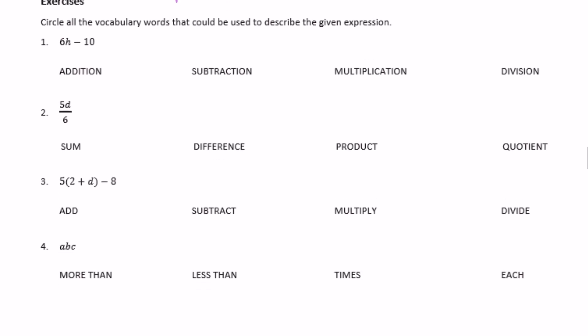Okay, circle all the vocabulary words that could be used to describe the given expression. Okay, so we have 6h minus 10. So I see minus 10, which is subtraction, but there's also 6h and that means 6 times h, so there's also multiplication in that expression.